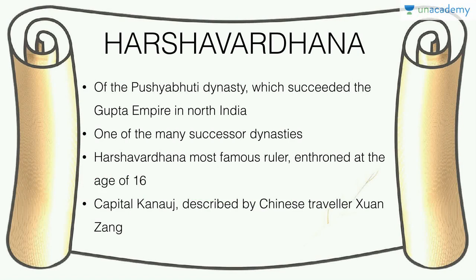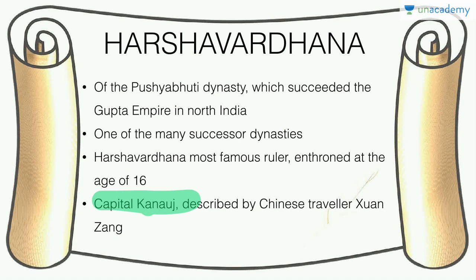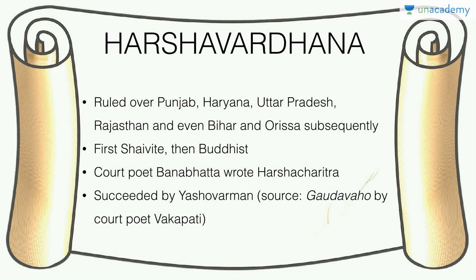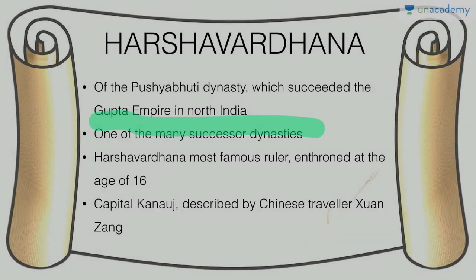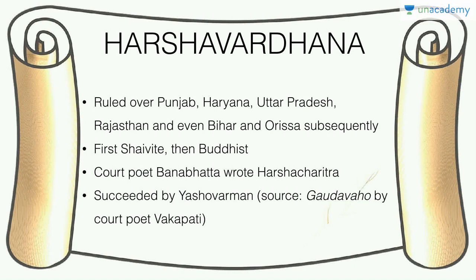Harshavardhan succeeded the fragmented Gupta empire. He was enthroned at age 16 and his capital was Kannauj. The Chinese traveler Xuanzang stayed at his court. He ruled over a vast area including Punjab, Haryana, Uttar Pradesh, Rajasthan, Bihar, and subsequently Orissa. He was first a Shaivite, then slowly converted to Buddhism. We know about him through Xuanzang's accounts and through Banabhatta's court poem Harshacharita about him. He was succeeded by Yashovarman.